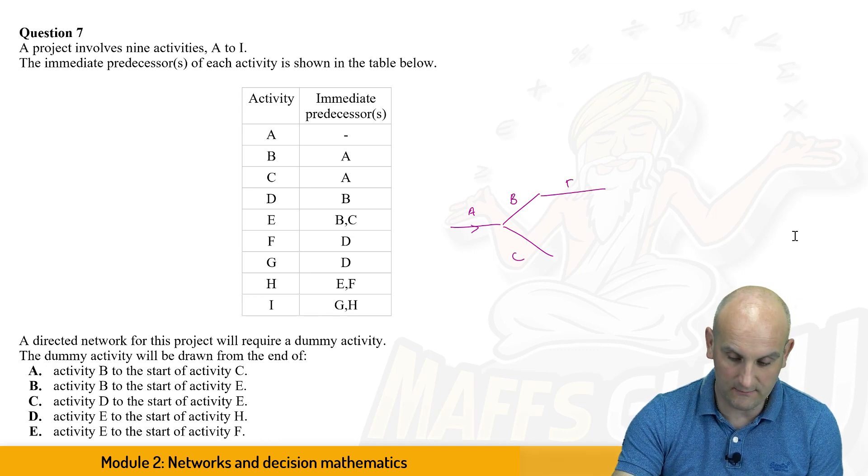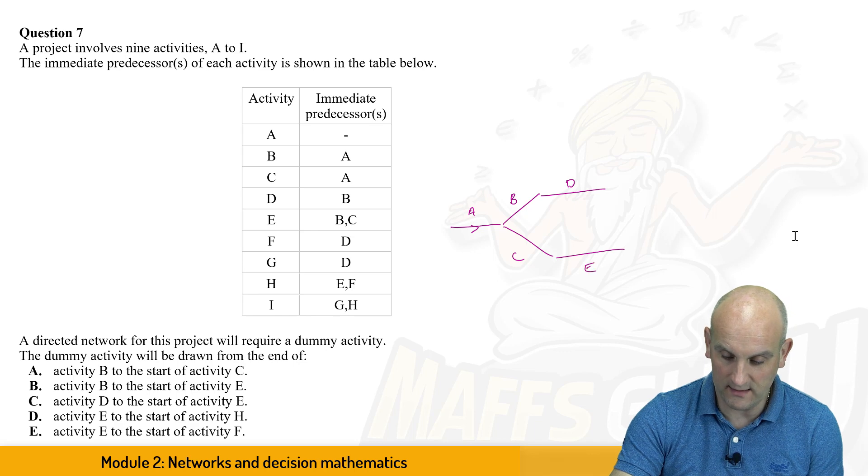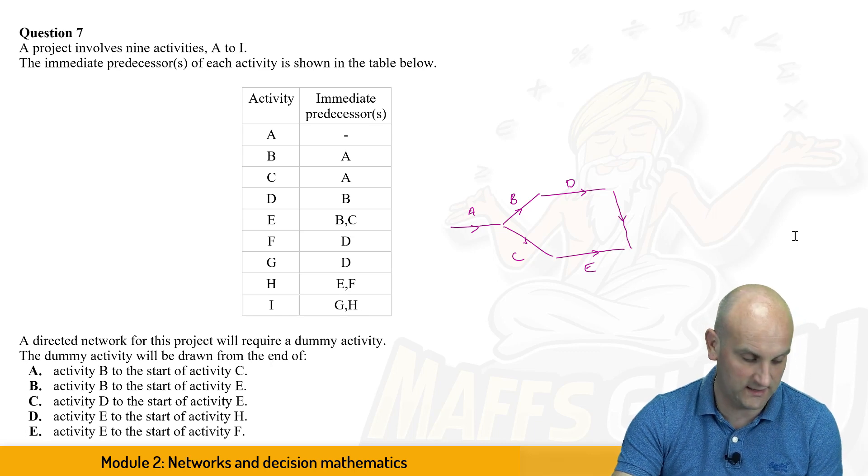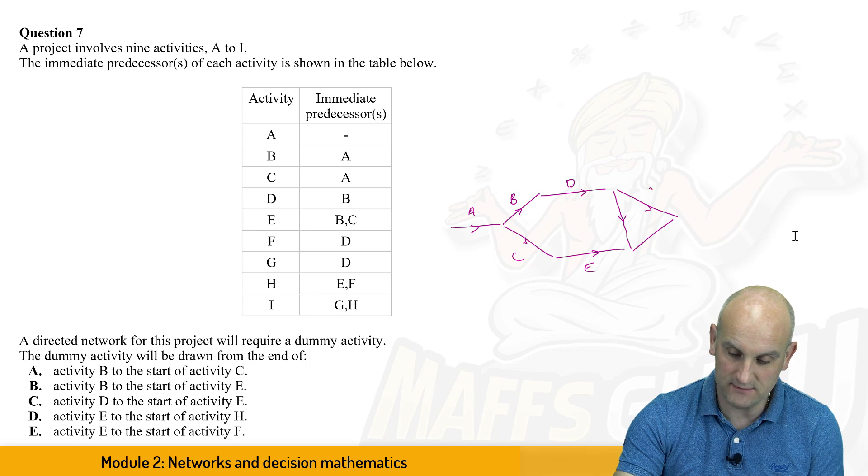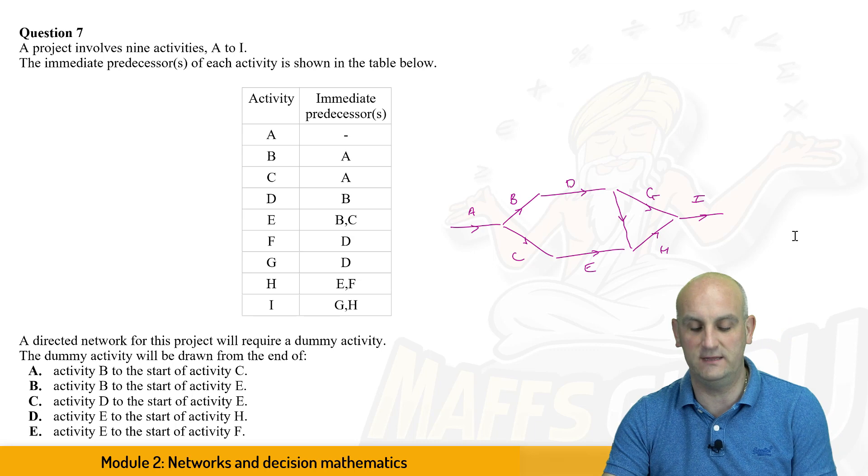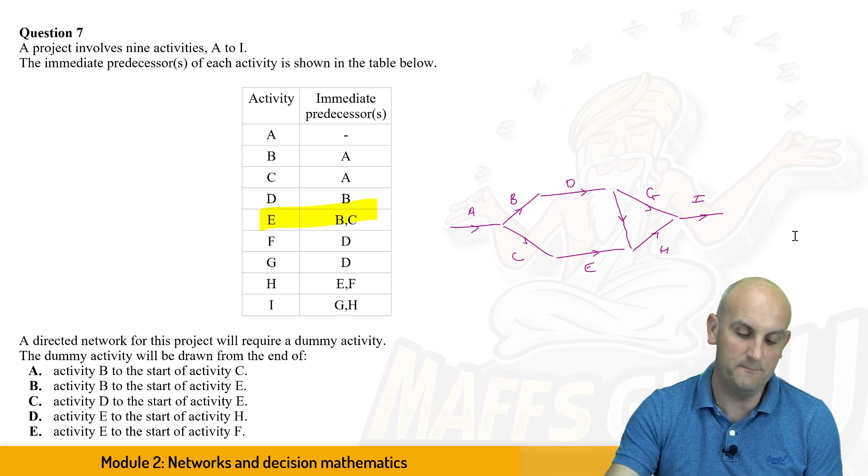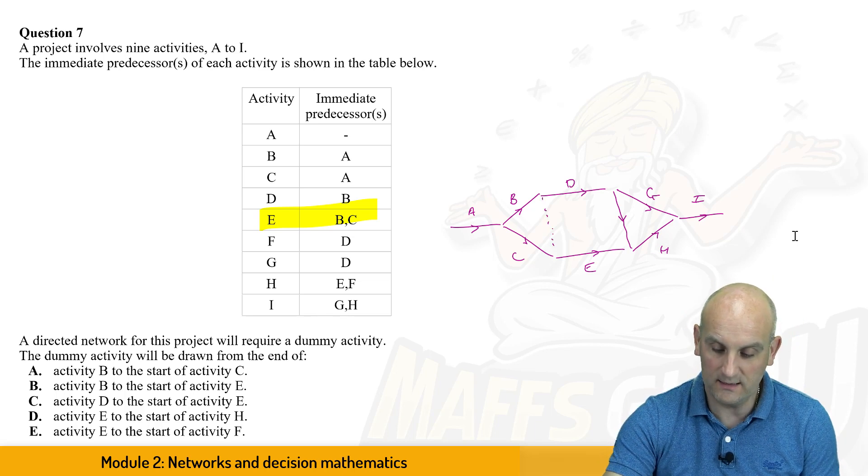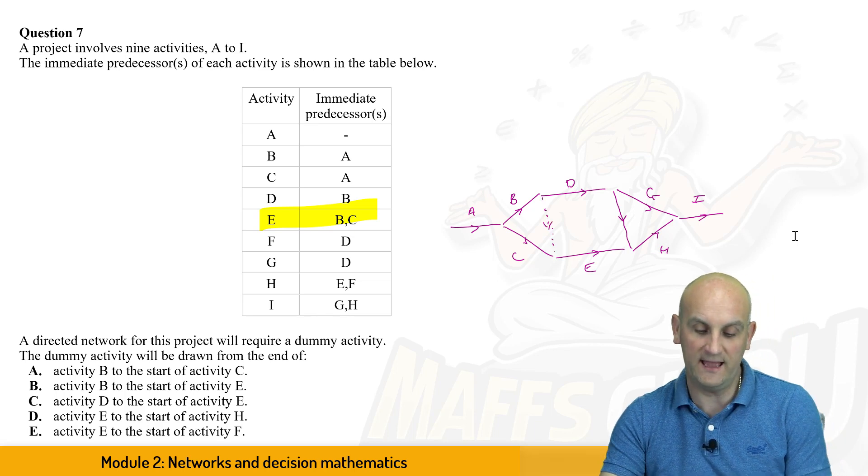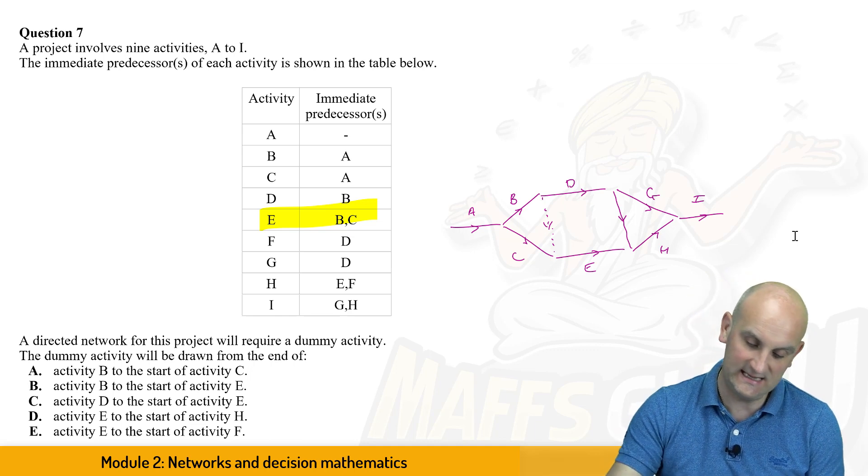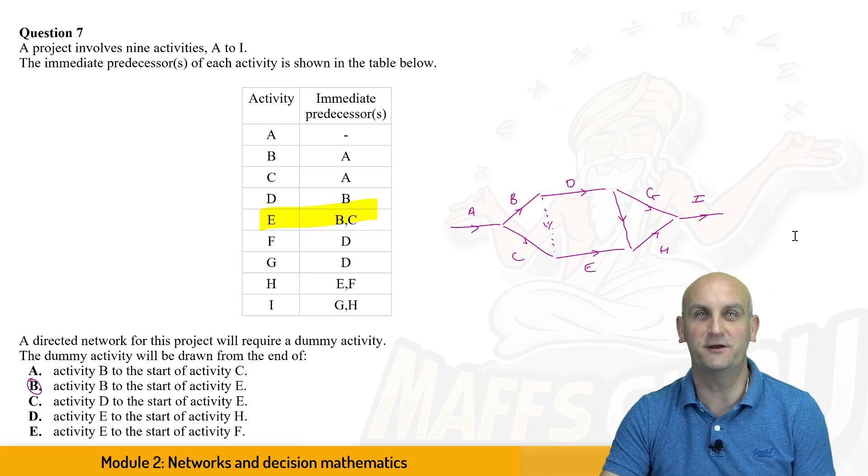I have D coming off of here. I have E coming off of here. Let's do the arrows in the right directions to get this correct. We have an F coming down here, but I've drawn it as a thick line. We have a G and a H. There is my G, there is my H, and there is my I. And for this to work, E can only start, as it says here, E can only start when B and C have both completed, and so my dummy is going to go there. So it's going to go from the end of activity B to the start of activity E, and that gives me B as my correct answer.